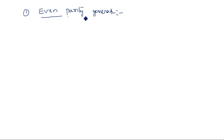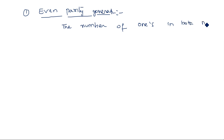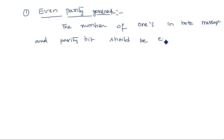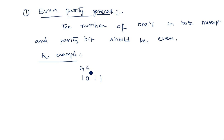So in the even parity generator, the number of ones in both the message and parity bit should be even. For example, I have a message bit like 1011 — this is the message bit with d3 d2 d1 d0 — and the parity bit P0 is equal to one. I am taking this as the parity bit.